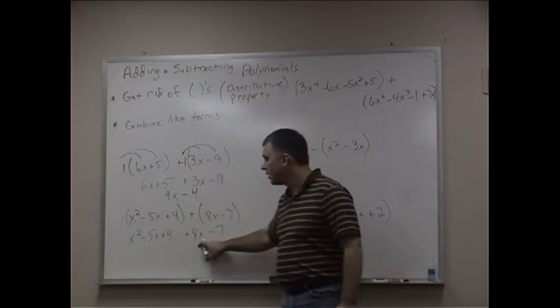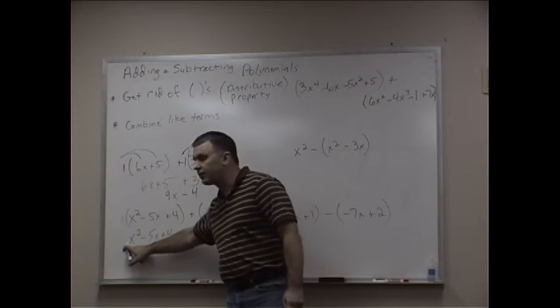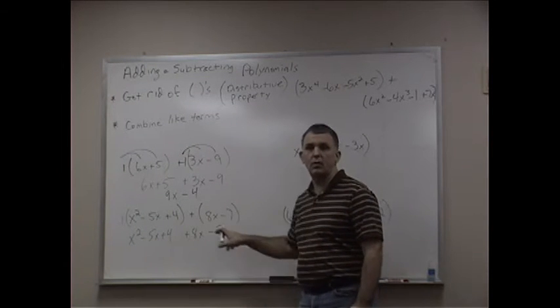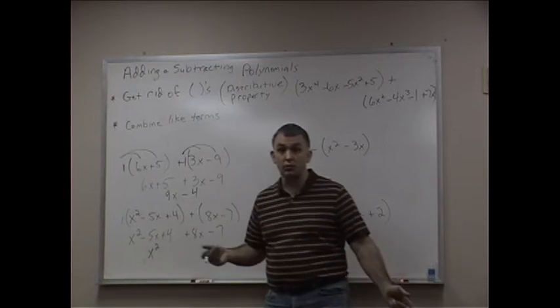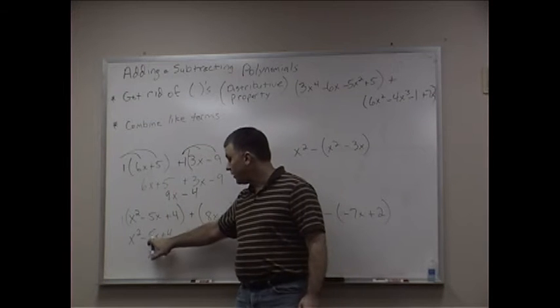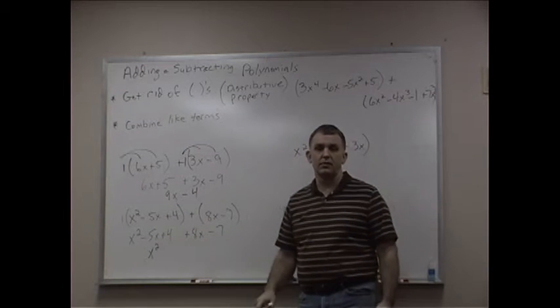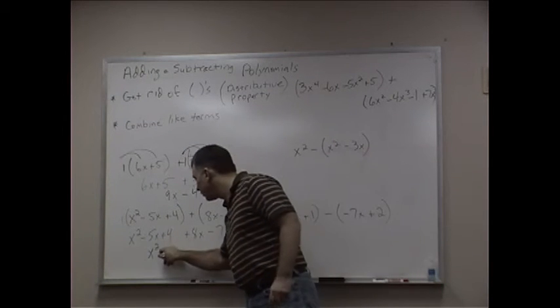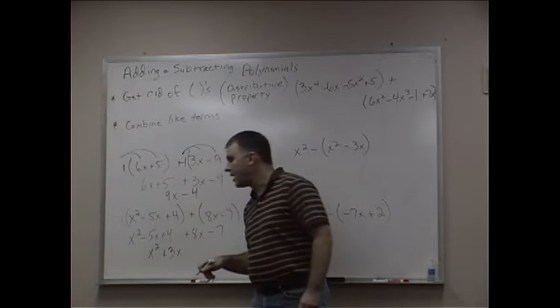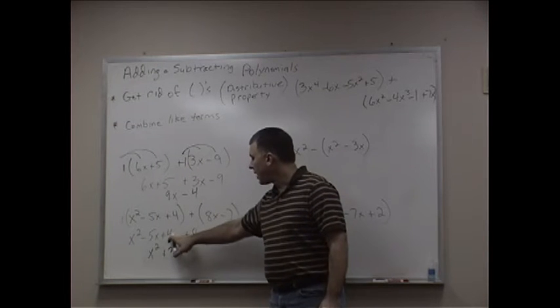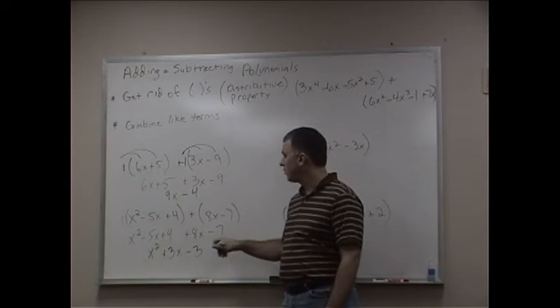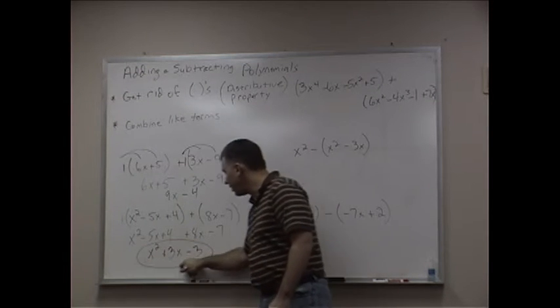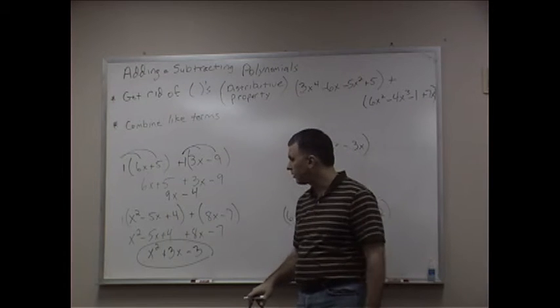Combine the like terms. Now this is an x squared. Are there any other x squareds in the problem? No. There's nothing to combine it with, so we just rewrite it. Now I have negative 5x and positive 8x. When I combine those, I get positive 3x. And when I combine 4 and negative 7, I get negative 3.